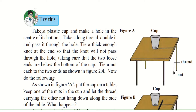Try this experiment: take a plastic cup and make a small hole in the center of its bottom using a needle or sharp pen. Take a long thread, double it, and pass it through the hole — use a thick enough thread so it doesn't slip through. Tie a thick knot at the end inside so the knot will not pass through the hole, keeping the two loose ends below the bottom of the cup.